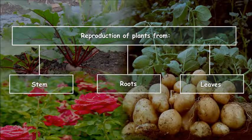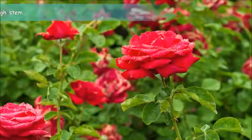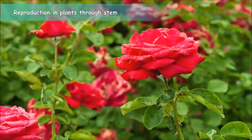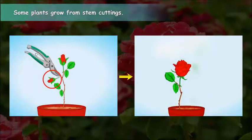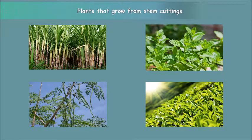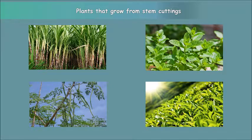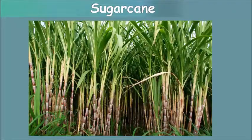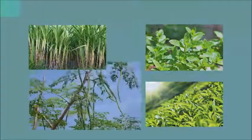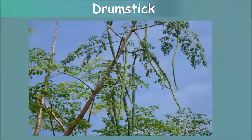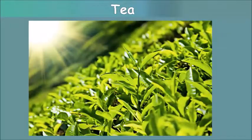There are certain plants in which reproduction takes place through their various parts like stem, roots, or leaves. Let's first see the reproduction in plants through stem. Some plants like rose grow from stem cuttings. Other examples of plants that grow from stem cuttings are sugarcane, mint, drumstick, and tea.